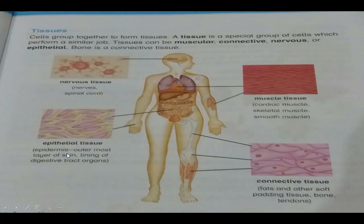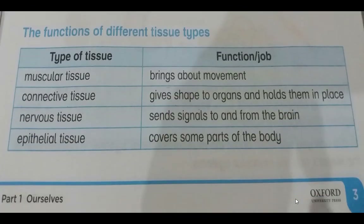The epidermis is the outermost layer of our skin. Connective tissue includes fats and other soft bending tissues, as well as bones and tendons. Now we will learn the functions of these tissues.